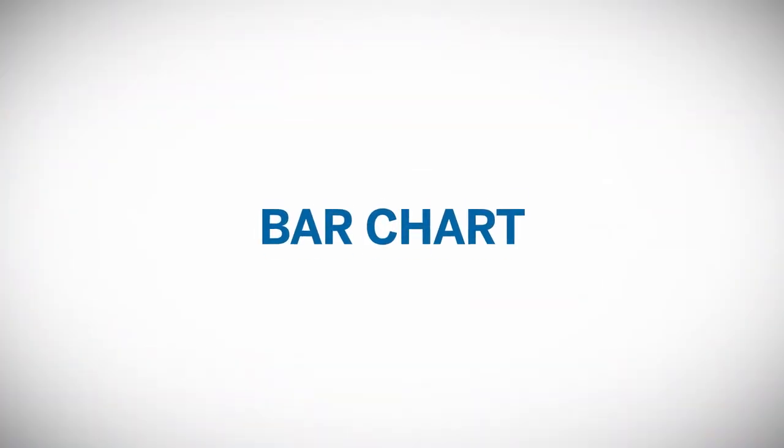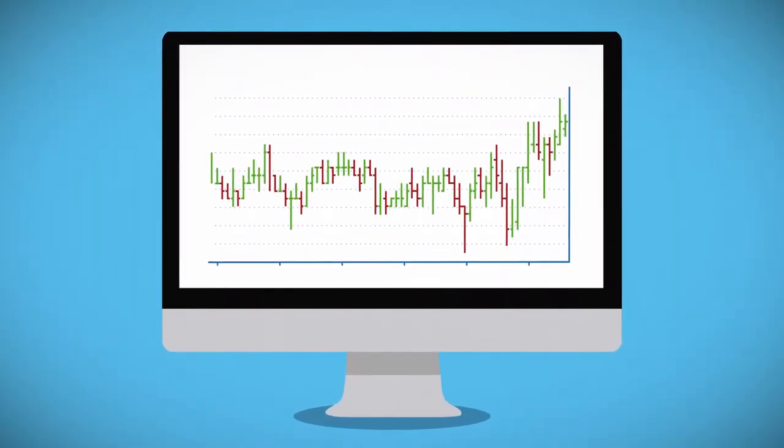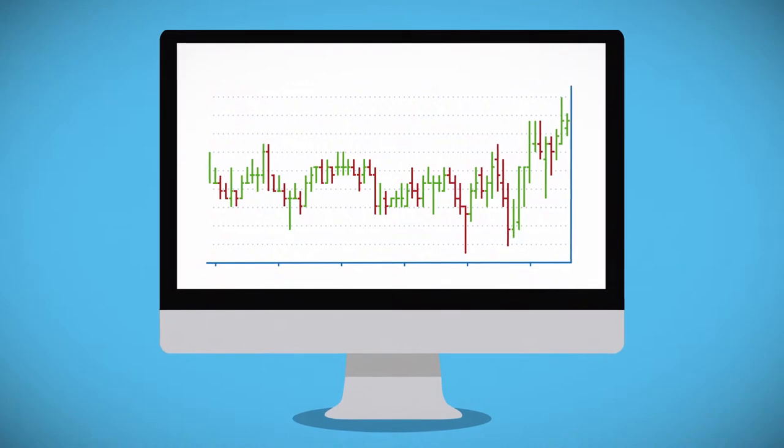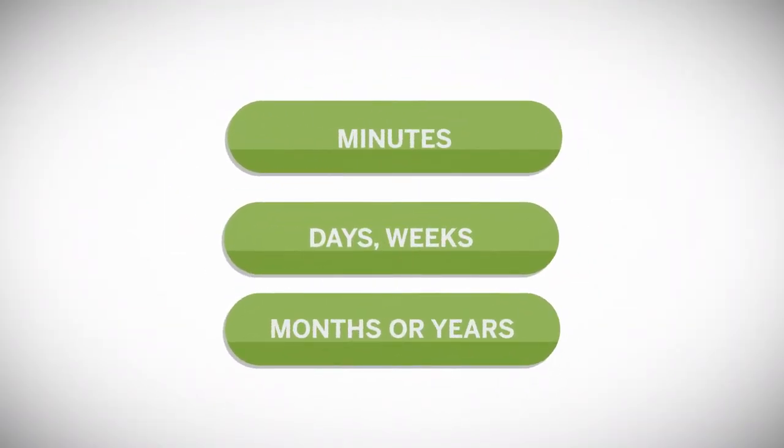Bar charts expand on the line chart by adding other pieces of key information, including the open, high, and low prices traded during a period, which can be defined in minutes, days, weeks, months, or years.